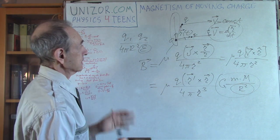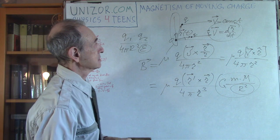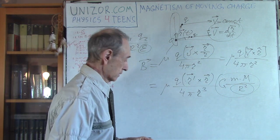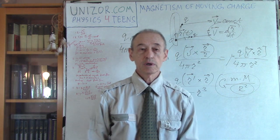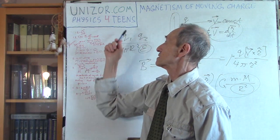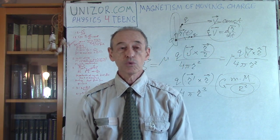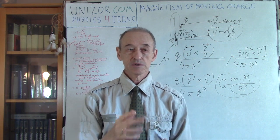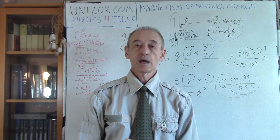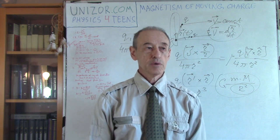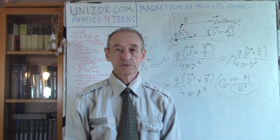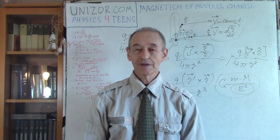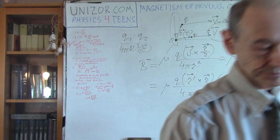And that's all about magnetism of moving electric charge. I suggest you look at UNIZOR's Physics 14 course and read the notes for this lecture — it's within the electromagnetism part, where we talk about magnetism of electric current. That's it. Thank you very much and good luck.